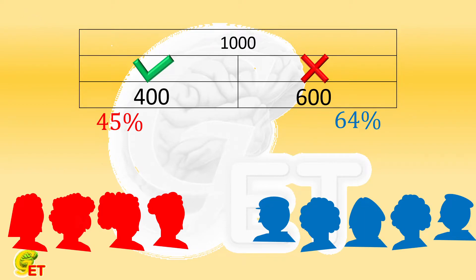This question does not directly ask us which variables to calculate, so the key point is that we need to find an appropriate index to describe the so-called overall performance. When it comes to overall performance, some variable with average meaning is generally required. According to the problem at hand, we can choose the average pass rate for comparison.